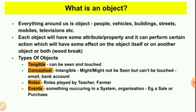What is an object? Everything around us is an object. You can take anything — people, vehicles, buildings, streets, mobiles, televisions. Each and everything around us, including ourselves, can be classified as objects. Now, any object you pick will have some properties, some attributes. For example, take yourself — you'll have attributes like your name, your age, your gender. Every object will have some kind of attribute associated with it.